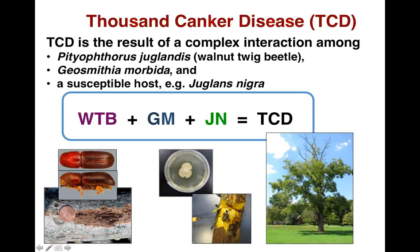It's called thousand cankers disease because it takes literally thousands of these inoculations to affect plant health. Geosmithia morbida is a weak plant pathogen, and as such, a lot of inoculum needs to be transmitted to the host to affect the tree.